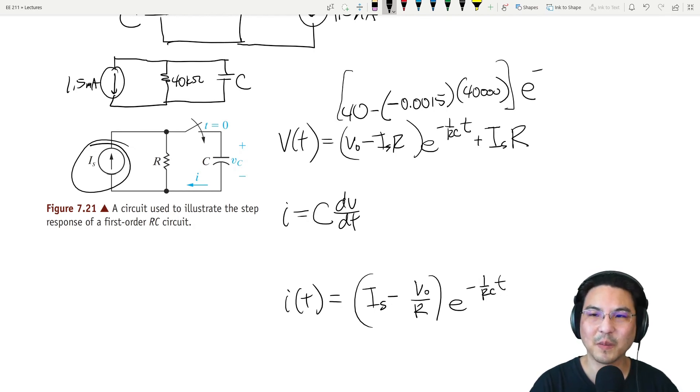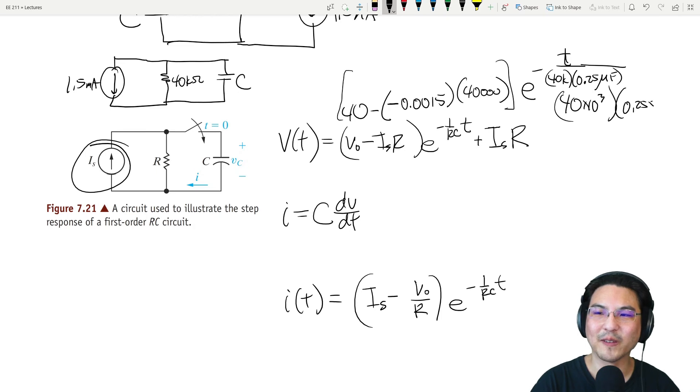e^(-t/RC). R is 40k, C is 0.25 microfarads, so just be mindful of the units: 40 times 10^3 and 0.25 times 10^-6. And then plus IR, which is right here.